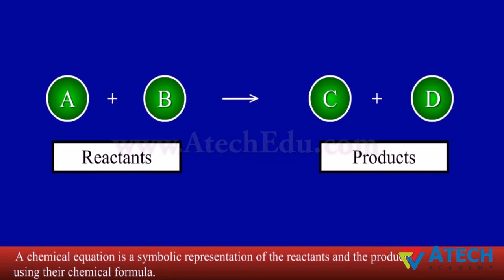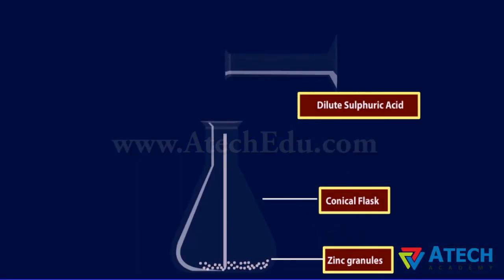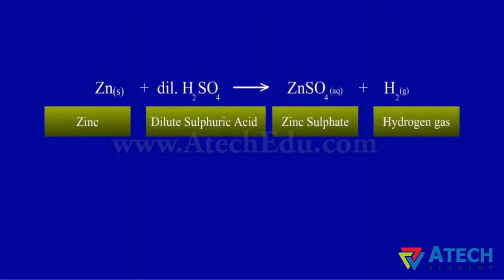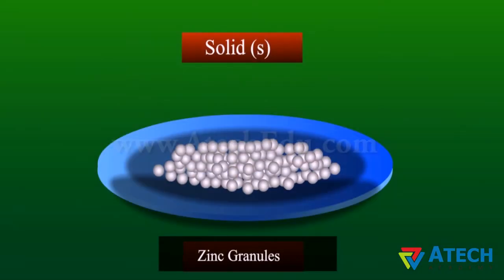The arrowhead points towards the products and shows the direction of the reaction. For example, when dilute hydrochloric acid is added to zinc granules, it forms zinc sulfate and hydrogen gas. In this chemical equation, zinc and dilute sulfuric acid are the reactants, and zinc sulfate and hydrogen gas are the products.